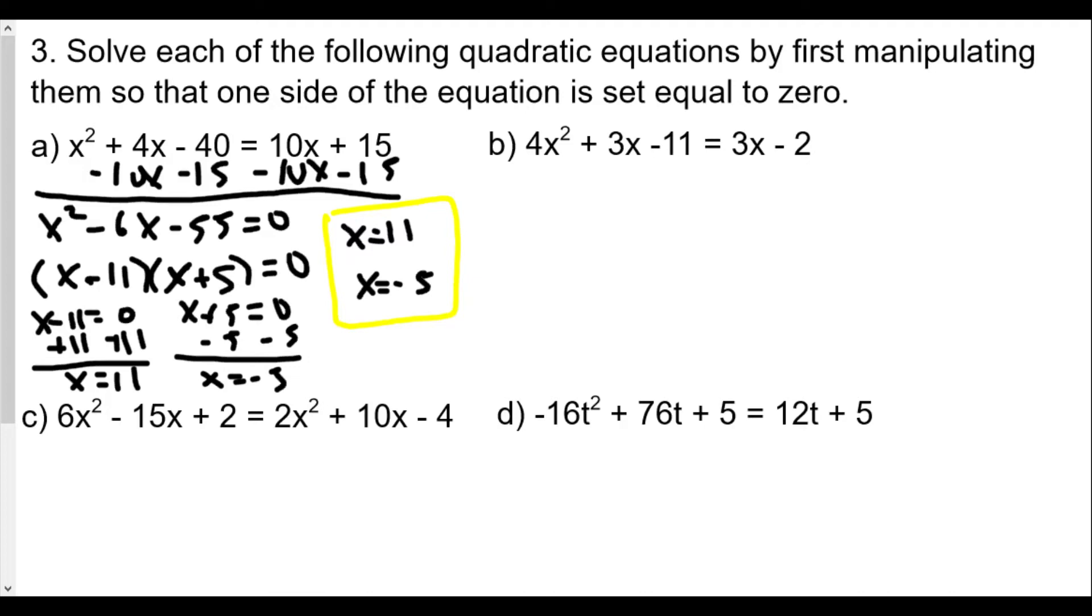Letter B: 4x² + 3x - 11 = 3x - 2. We're going to subtract 3x both sides, as well as add 2 to both sides, because opposite of negative 2 is positive 2. We're going to get 4x² - 9 = 0.